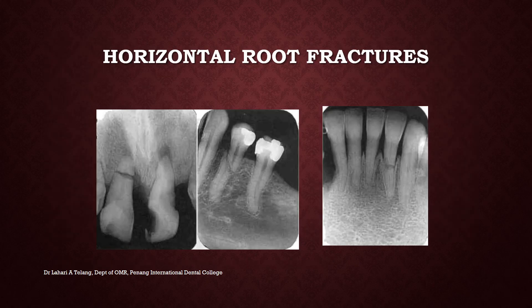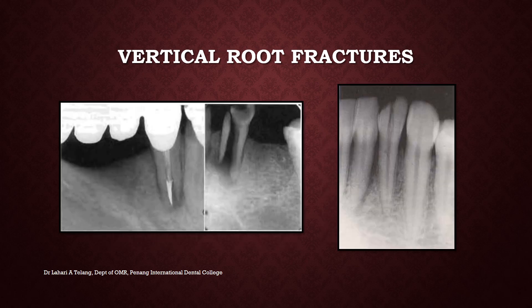This is an example of horizontal root fractures. You can see a middle-third fracture, an oblique fracture which is also considered a horizontal fracture, and again a middle-third fracture of the root. Vertical fractures have poor prognosis. These can occur due to significant stress in load-bearing teeth and root canal treated teeth. This shows a vertical fracture of the entire root, and this is a crown-root vertical fracture.